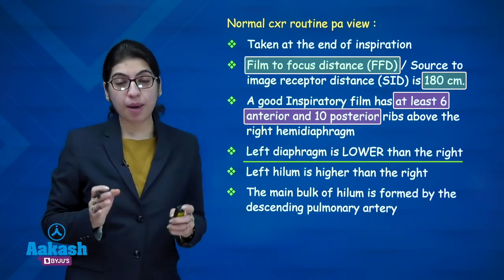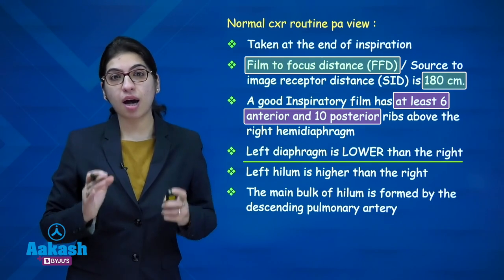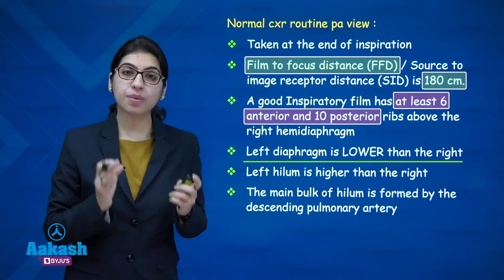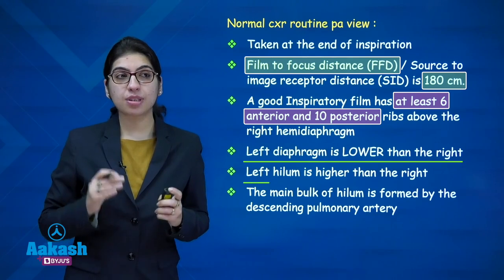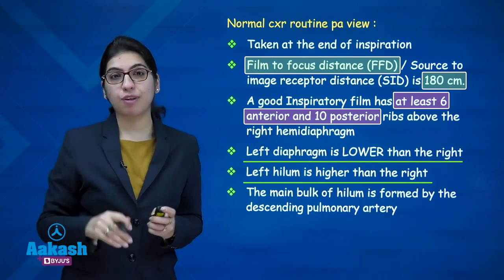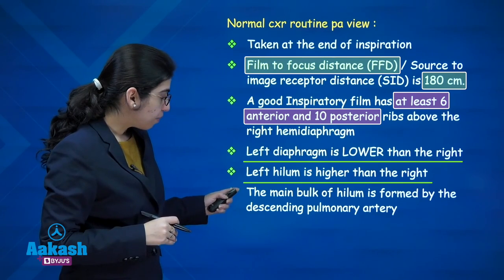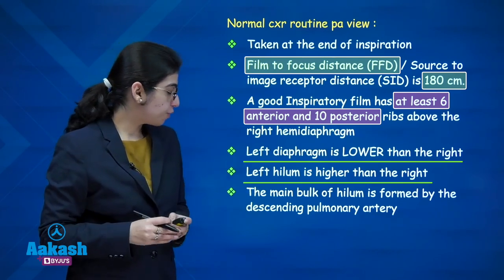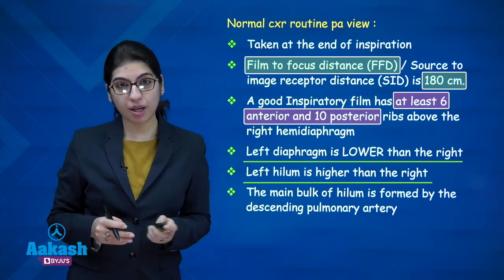The left diaphragm is lower than the right because the heart sits on the left one, whereas the left hilum is higher than the right because the left main bronchus goes above the left pulmonary artery. The main bulk of the hilum is formed by the descending pulmonary artery.